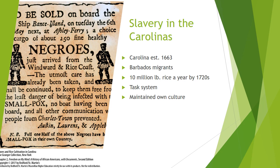Carolina planters, like those in the Chesapeake, didn't concern themselves with converting their slaves. One Anglican missionary noted that slaves worked seven days a week and that great distances between plantations prohibited religious instruction and gatherings. He also believed such gatherings would be unwise, because the opportunity of knowing their own strength and superiority in number would make them tempted to recover their liberty. The Africans brought into the Carolinas were such a large proportion of the population that it was thought unsafe to make them aware of this fact.